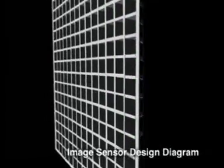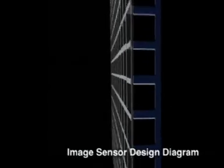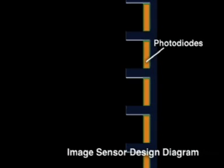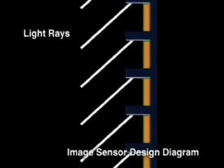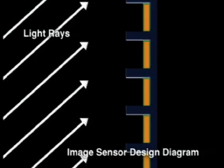The image sensor used in a digital camera, on the other hand, is essentially a chip with pixels laid out at regular intervals on a grid, with photodiodes in the depressions inside the pixels. This means that light cannot reach the photodiodes effectively unless it comes straight through the lens.